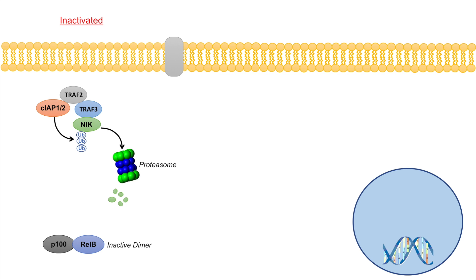So how does the non-canonical NF-kappa-B pathway actually get activated? It gets activated in a receptor-mediated fashion. Several receptors can operate within this pathway, including CD40, BAFF-R or B-cell activating factor receptor, and LTBR or lymphotoxin beta receptor. The ligand for CD40 is CD40L; for the BAFF receptor it is BAFF; and for the lymphotoxin beta receptor it is lymphotoxin beta. There are also other ligands such as RANKL and TWEAK, which also activate this pathway.